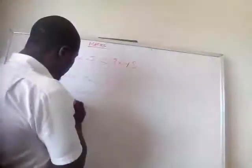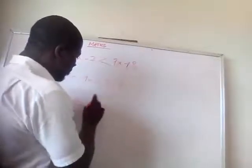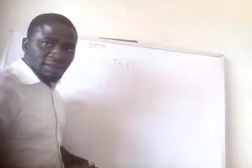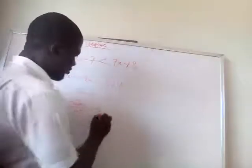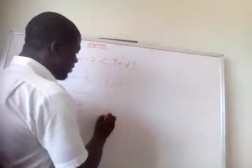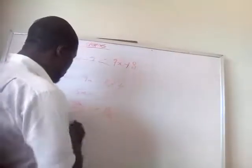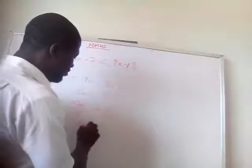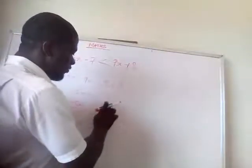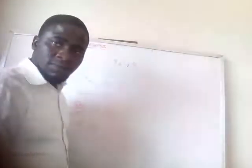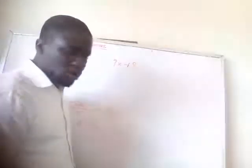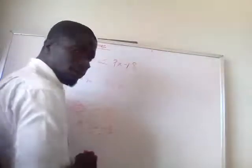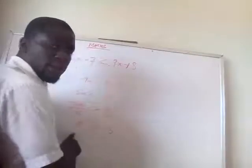You have minus 5x over minus 5. Remember what I said — the sign changes, so it becomes x is greater than 15 divided by minus 5. Minus cancels minus, 5 cancels 5. 15 divided by minus 5 gives minus 3. So x is greater than minus 3.